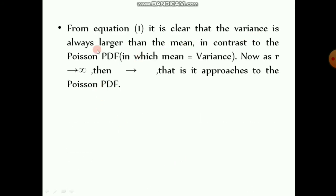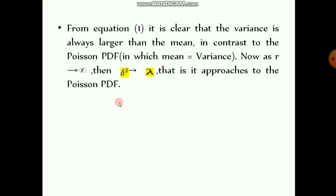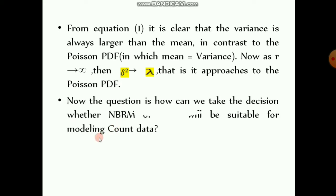From this equation it is clear that variance is always larger than the mean, in contrast to the Poisson probability distribution function in which mean equals variance. As r tends to infinity — that is, as r increases — delta-squared approaches lambda, meaning the distribution approaches the Poisson probability distribution function.